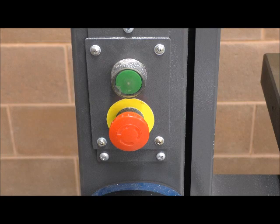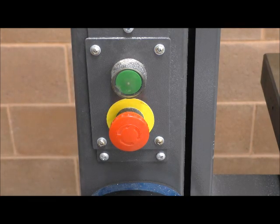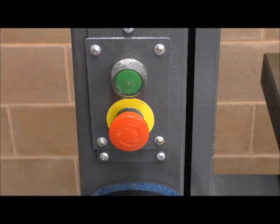To operate the band saw, pressing firmly on the green button will turn the machine on. Pressing firmly on the large mushroom red button will turn the machine off.